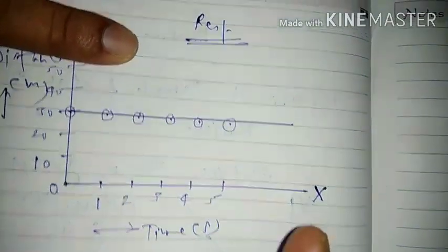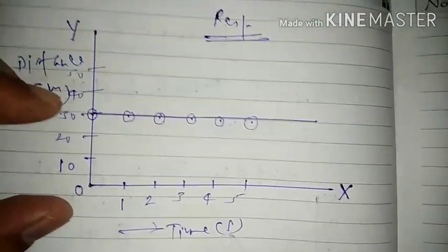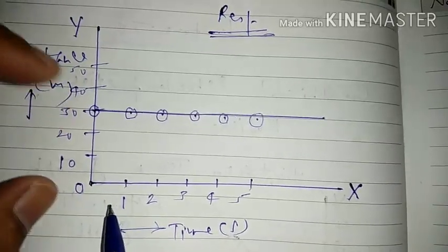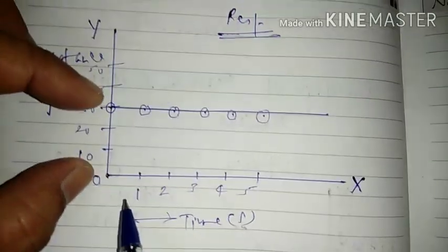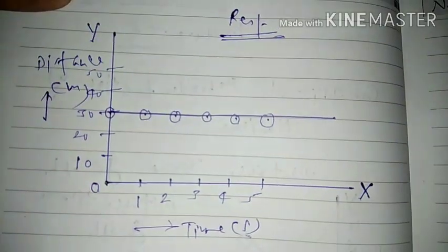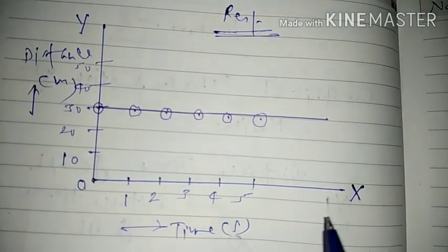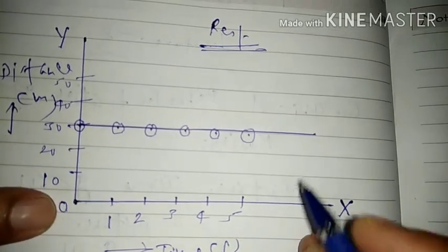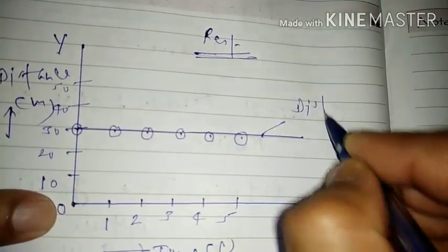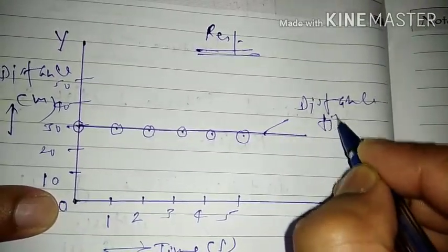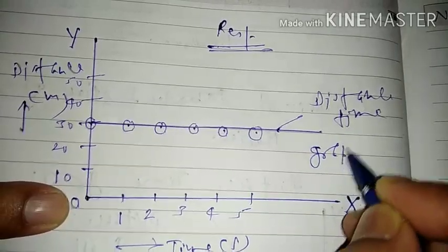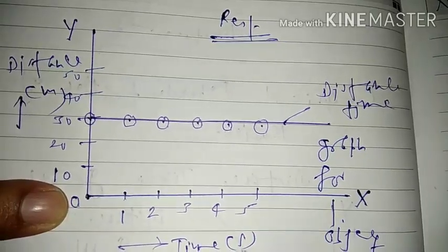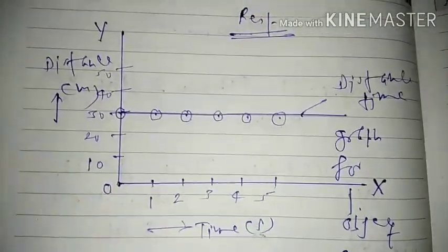In our first lecture we read the meaning of rest. If any object does not change its position — here the position is fixed, time is going on but the distance of that person is always 30 meters from the reference point — then if any object does not change its position with respect to its surroundings with time, it is said to be at rest. So this is the distance-time graph for an object at rest.